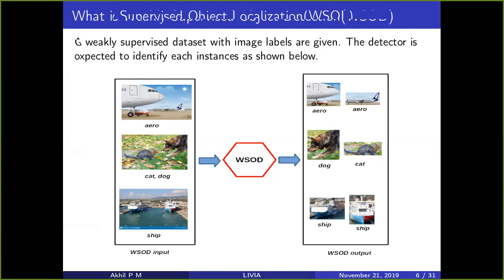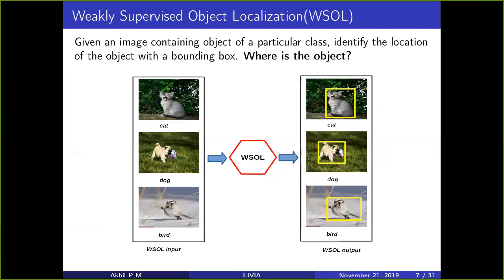The localization problem is a bit simpler. Again you are given the label, but there is only one type of object — only one cat or dog or something like that — and the objective is to locate where in the image the cat or dog is, with a bounding box.